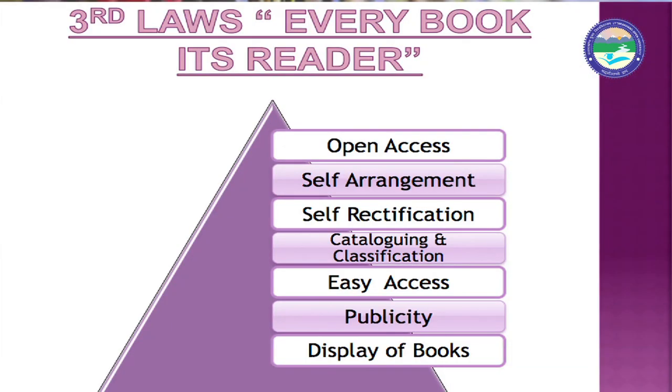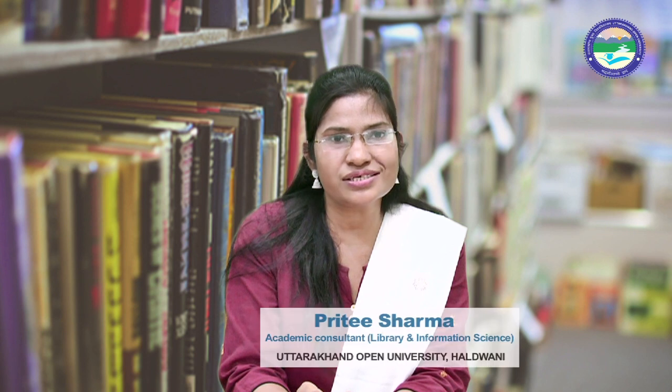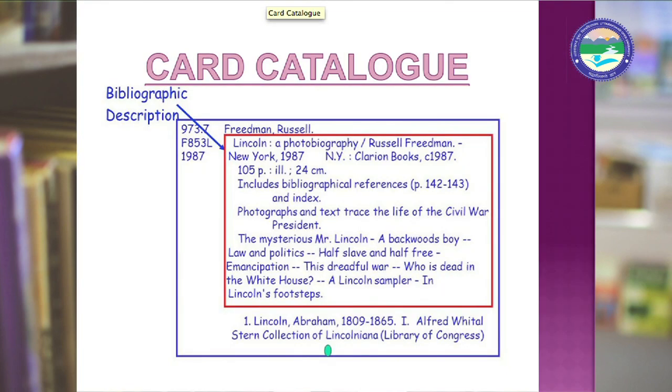Now let's talk about cataloging and classification. A catalog contains all the details of books — author's details, publication details, title details, series details, and subject details — made for users in catalog card format. On the left side is a classification number provided by library staff from DDC or CC according to subject. There is also a bibliographic description with the author's name, book's title, and series or content summary in short form.